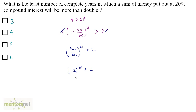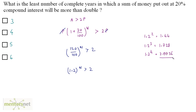We apply trial and error. 1.2 raised to 2 is 1.44, which is still less than 2. 1.2 raised to 3 is 1.728, also less than 2. Increasing the power, 1.2 raised to 4 is 2.0736, which is greater than 2. So 1.2 raised to 4 is greater than 2, therefore n equals 4. The answer is option B.